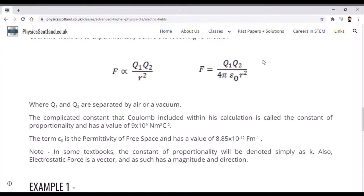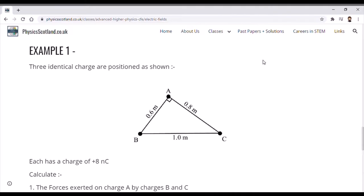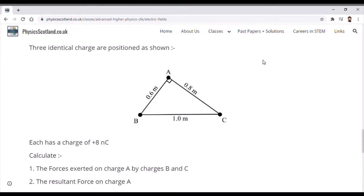Having a look at example number one, we've got three identical charges positioned as shown—points A, B, and C—separated at different distances, but they each have a charge of plus 8 nanocoulombs. The question is asking us to calculate the force exerted on charge A by the other two charges B and C, and the resultant force on charge A overall.